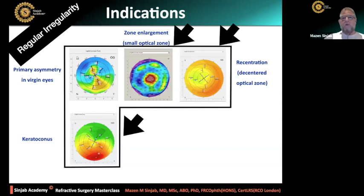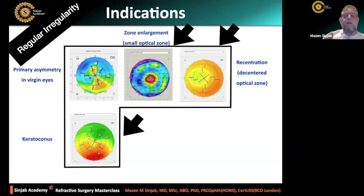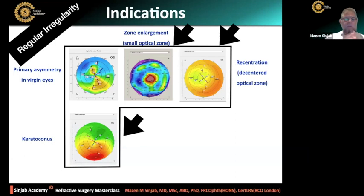Some people may claim they are getting very good results with Contura. Of course, Schwind and Zeiss people will say the same for their profiles. Let us be scientific — don't compromise normal tissue if the brain is not suffering. If you don't feel pain or headache, do you take a painkiller? Nobody will. The topography-guided treatment is for enlarging the zone, for recentration of a decentered optical zone, and for treatment of keratoconus when indicated and the criteria are met.